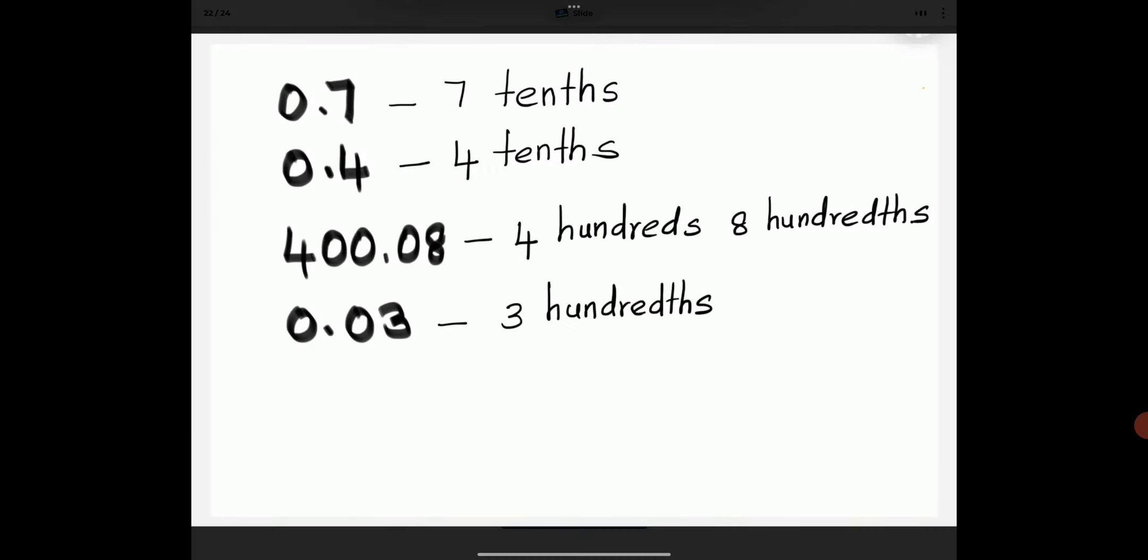0.7 is 7 tenths. 0.4 is 4 tenths. 0.03 is 3 hundredths.